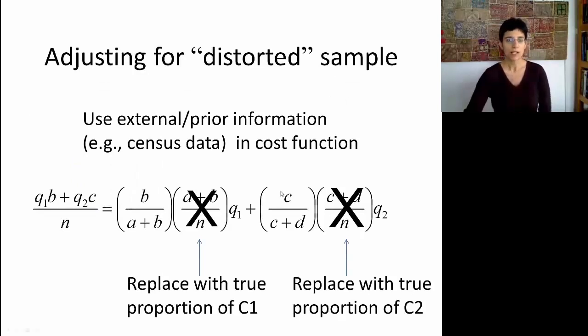So if you remember the previous formula that we had, we can actually expand it and write it out in the form that you see here on the right-hand side. All that I did here is multiply and divide by a plus b and c plus d. The reason this is a useful expansion is that we see that we have this form a plus b over n, which is basically the proportion in the sample of c1 class members. Similarly, c plus d over n is the proportion of c2 members. If our sample is distorted, it's not a random sample, what we can do is replace these ratios here with the correct ratios in the population where we will be implementing this algorithm. And in this way, our cost metric is calibrated towards the real ratio of defaulters to non-defaulters.